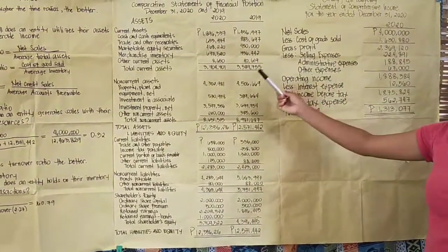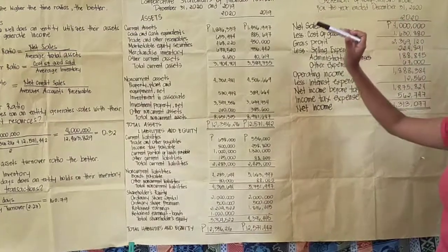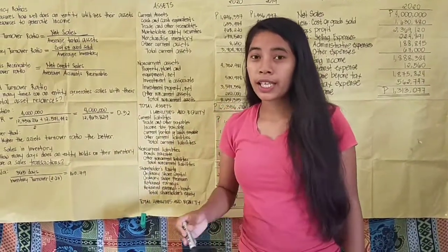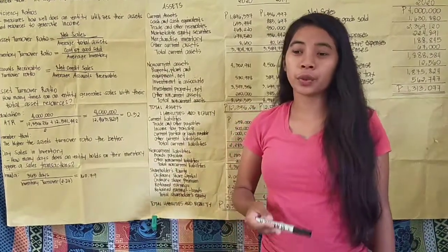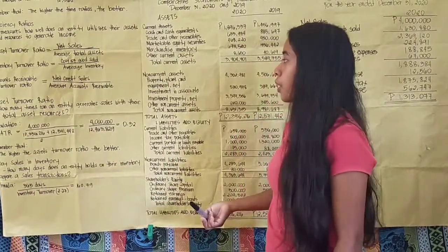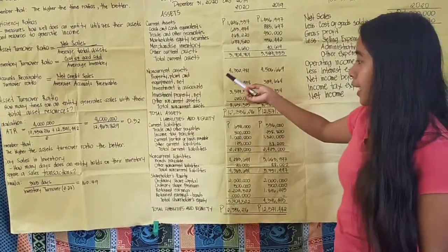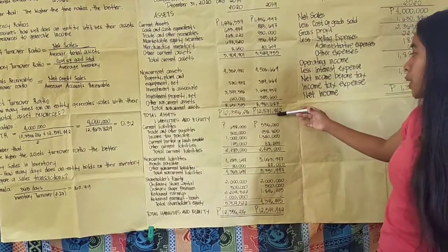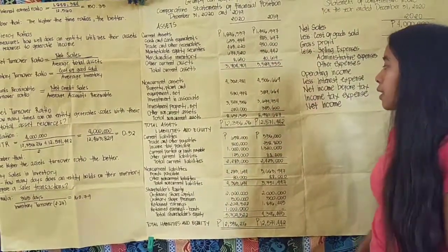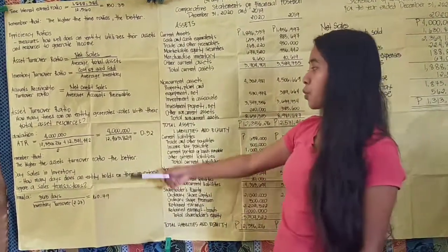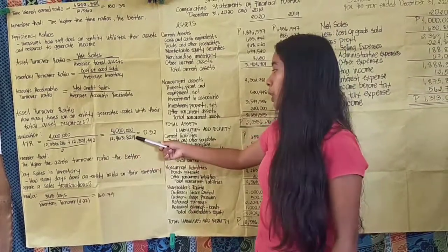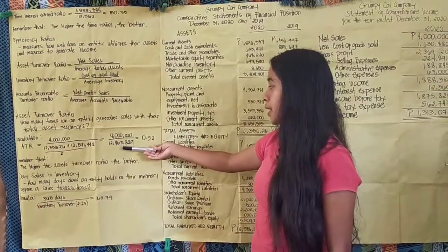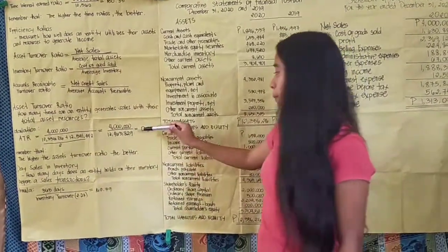Net sales from the income statement is 4 million. To get average total assets, add total assets of 2020 (12,356,216) to total assets of 2019 (12,571,442) and divide by 2, giving an average of 12,463,829. Dividing 4 million by 12,463,829 gives 0.32.